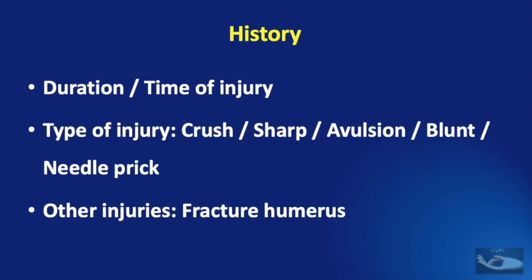In the history, apart from the general factors such as the age, sex, occupation, and handedness of the patient, we should note the duration and time of injury, and the type of injury — whether it has been a crush, sharp injury, avulsion injury, blunt injury, or even a needle prick, because even needle prick injuries can cause radial nerve palsy. Other injuries like fracture of the humerus should also be ruled out.